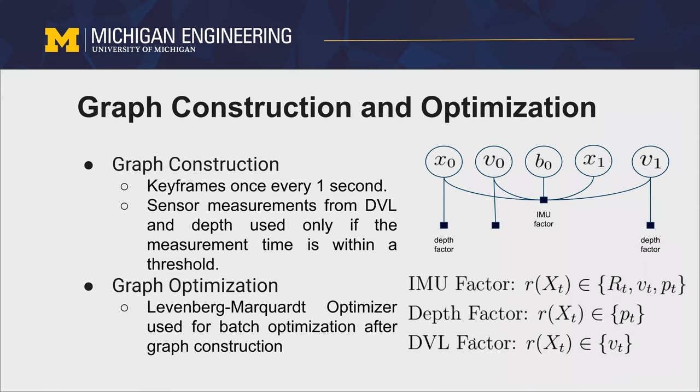For constructing the factor graph, it was important to define what the keyframes for the graph would be. As we did not use exteroceptive sensors, the definition of adding a new node was time-based, where a new node was added after one second of the robot runtime. As the sensors operated at different frequencies for taking measurements, their measurements were added as factors to the nodes only if the time of the measurement was close to the time at which the node was added. This ensured that sensor measurements were representative of the node that they would be constraining. Batch optimization was then performed by using the Levenberg-Marquardt optimizer.